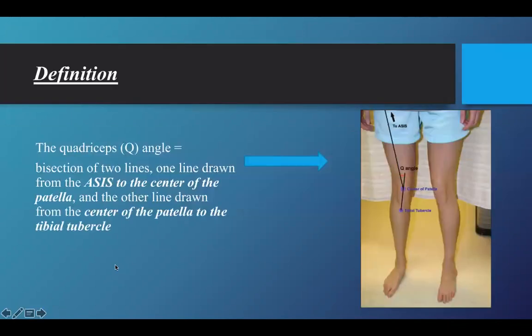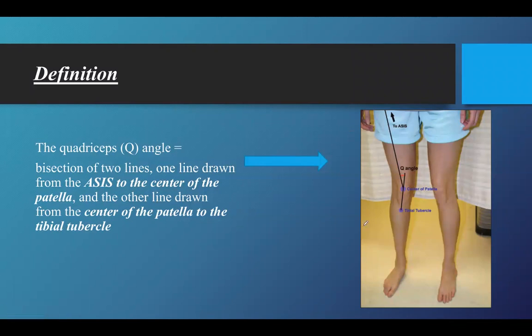To define the quadriceps angle, it is the angle between the ASIS and the center of the patella, and a line drawn between the center of the patella and the tibial tuberosity.